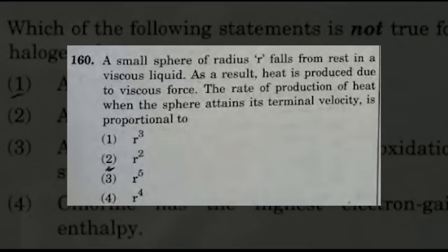The next question: a small sphere of radius r falls from rest in a liquid. As a result, heat is produced due to viscous force. The rate of production of heat when the sphere attains terminal velocity is proportional to — the suggested answers are options 1, 2, and 3, that is, r³, r², or r⁵.